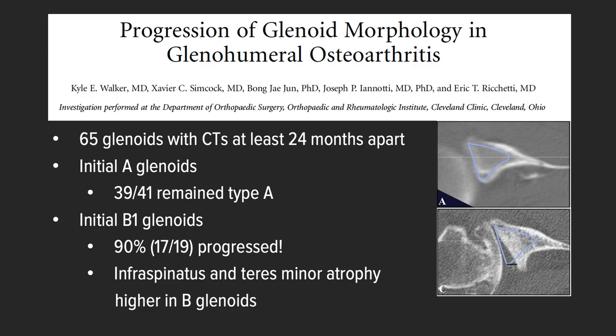This has been elegantly shown by Walker in a previous study where they looked at type A glenoids and took CT scans 24 months later, and found that A glenoids — 39 to 41 — remained the same. But in B1 glenoids, 17 and 19 progressed, so 90% progressed on to B2 or B3 glenoids. So once you start down this path, it's hard to reverse.